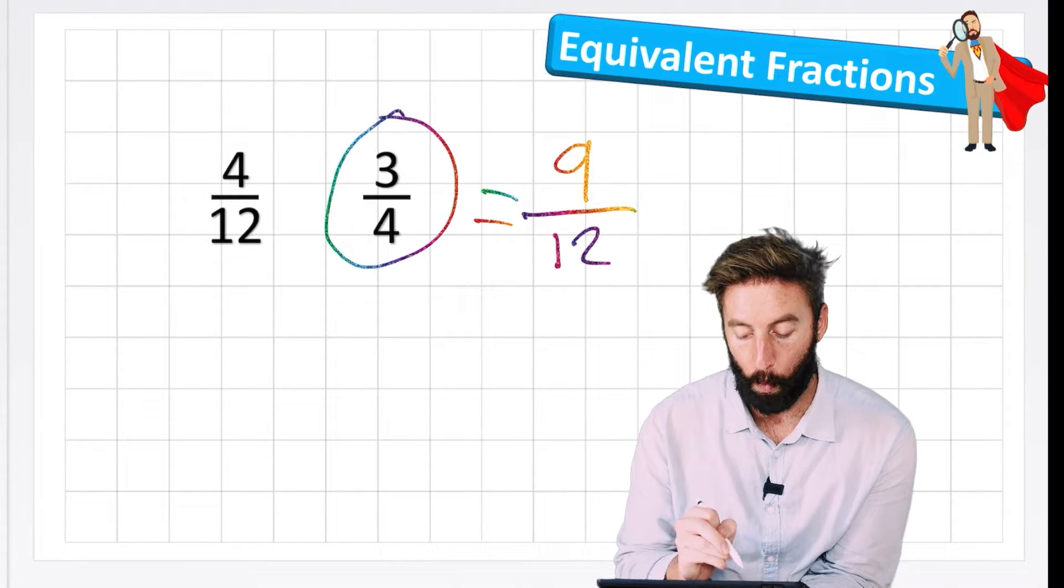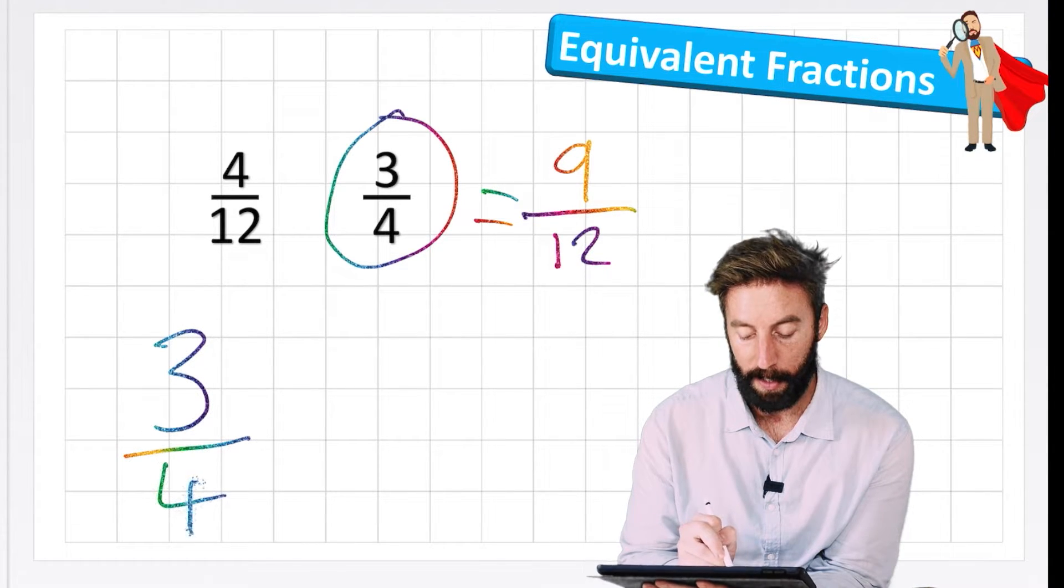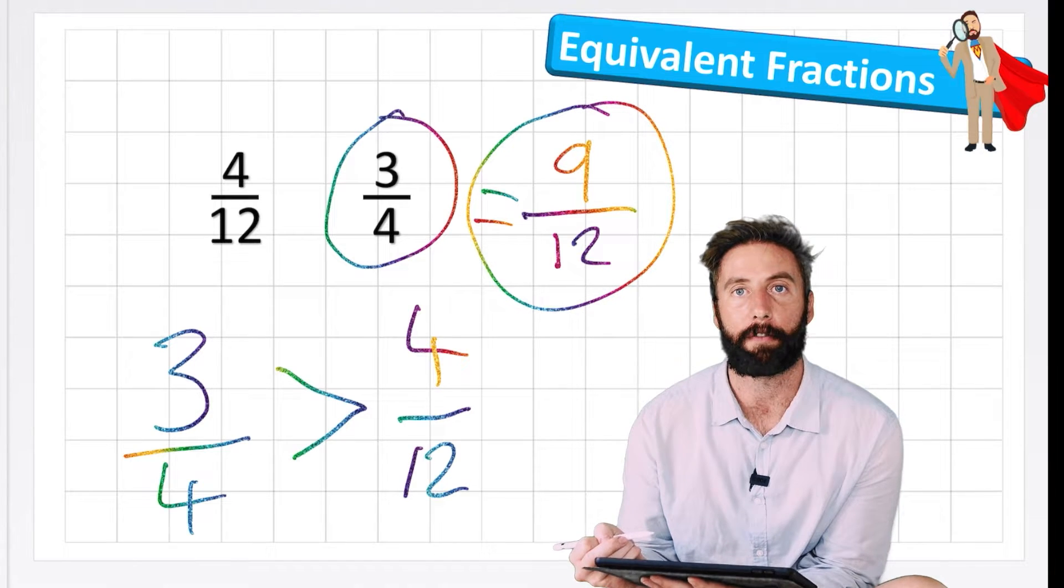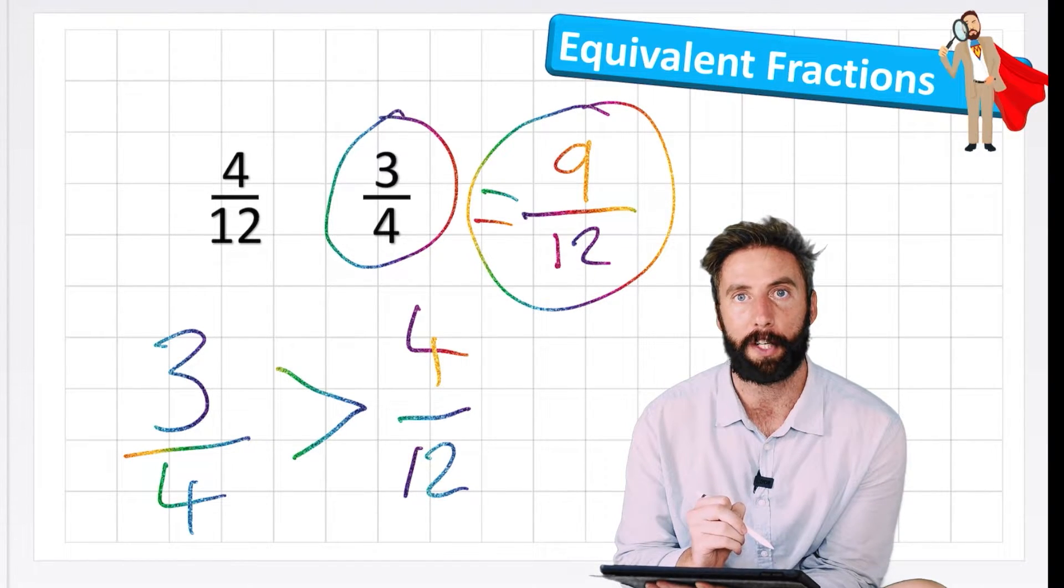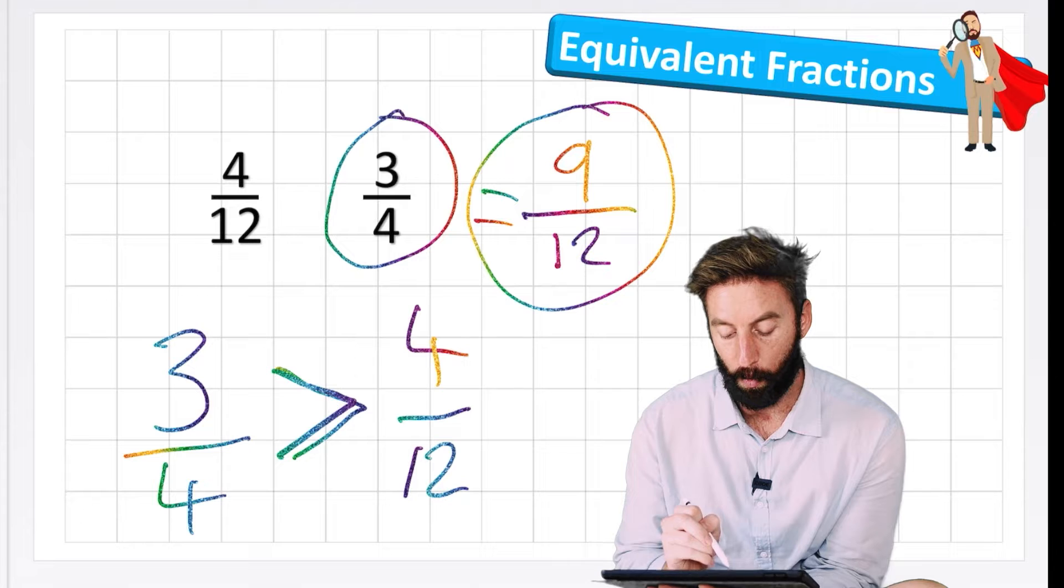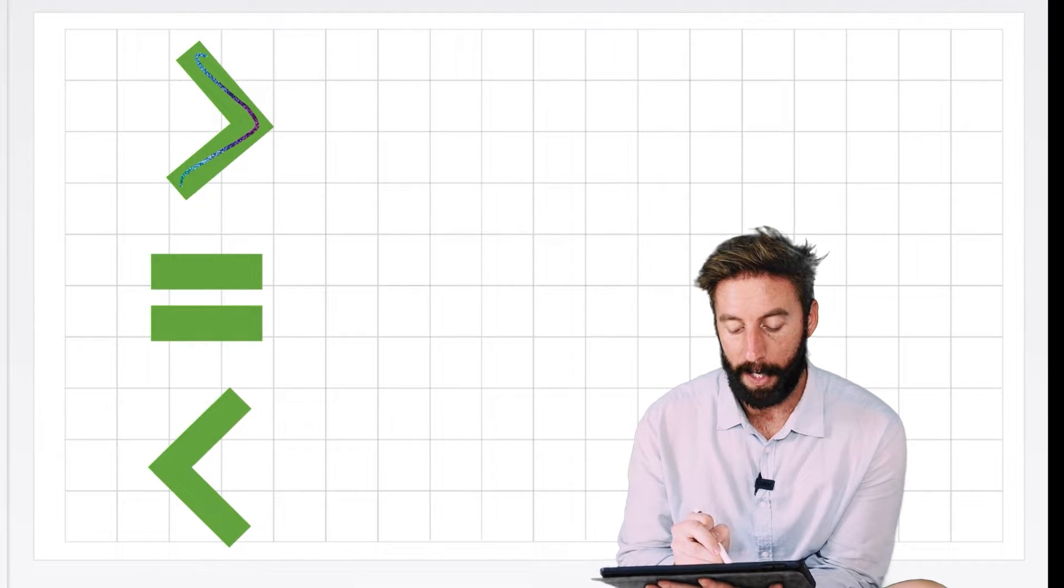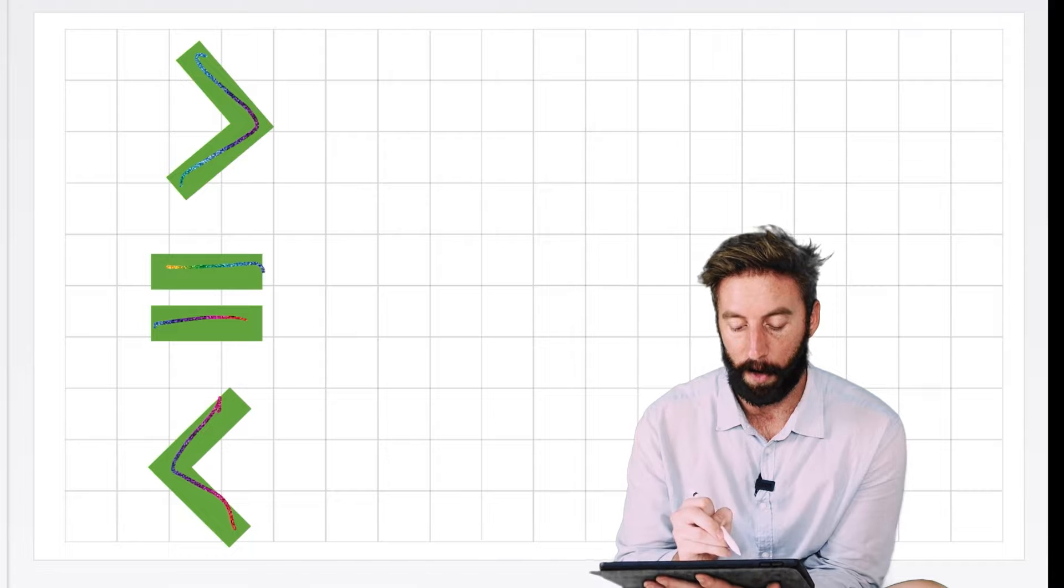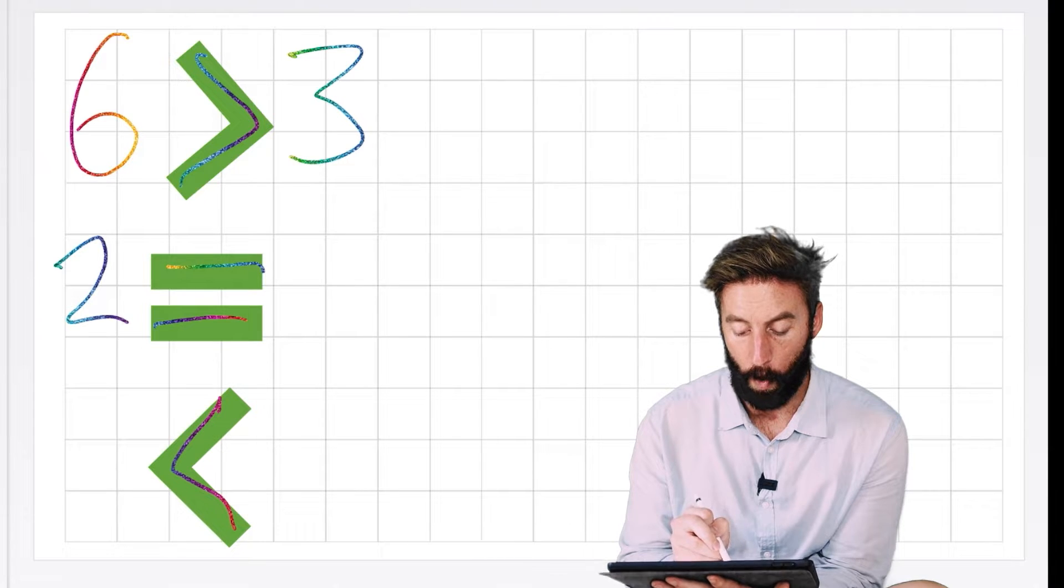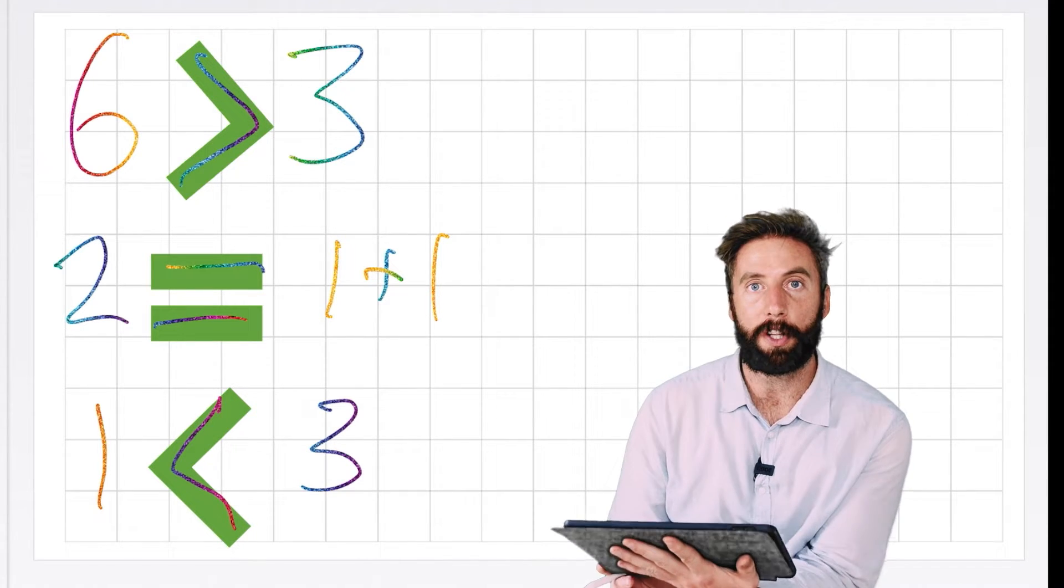But the question said, which one is greater, 4 twelfths or 3 fourths? So I'm going to write it like this: 3 fourths is greater than 4 twelfths. I'm not going to put my 9 twelfths, because that's the equivalent fraction we made up to help us when using the two fractions that we started with. And now I've just used a funny little symbol, this one here. If you saw the previous video, you will realize that that means greater than. But we have three symbols that are very important when we're comparing. We have the greater than symbol, the equal to, or the less than. And these work a little bit like this. I'll do this very quickly. 6 would be greater than 3. 2 would be equal to 1 plus 1. And 1 is less than 3. So that's just a very quick look at that.